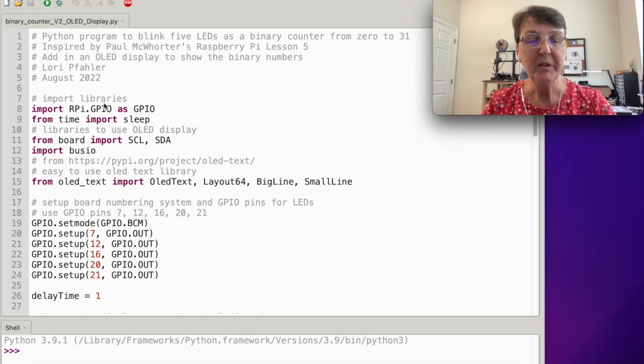So the first thing we'll do in the code is import the needed libraries. We'll use RPi.GPIO, the time library to have the sleep function, then from the board library we'll need I2C functions and import the busio library, and then this OLED text library so that we can communicate with the OLED screen. All of these here are needed to use the OLED display.